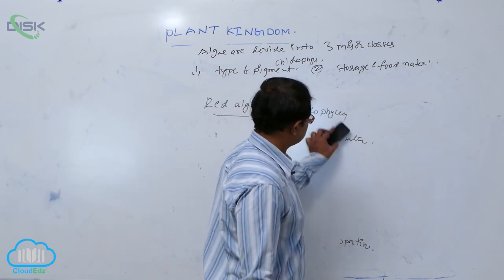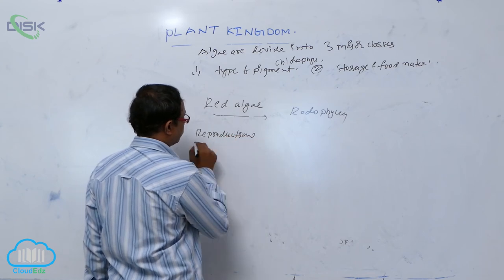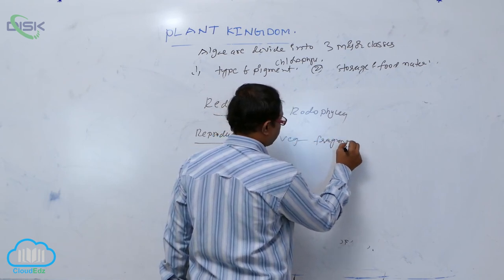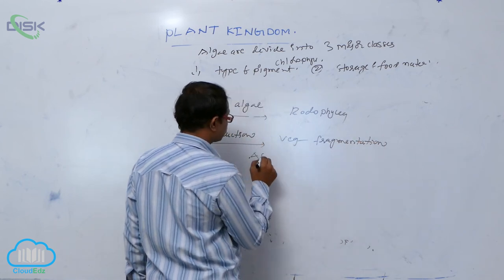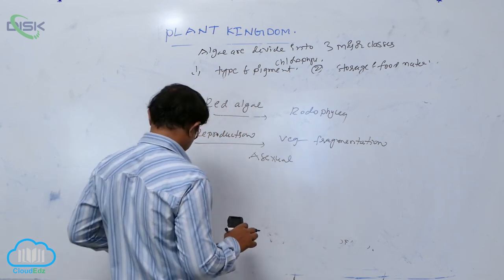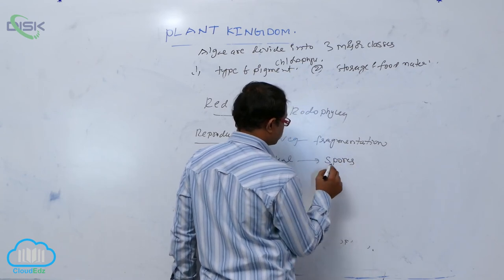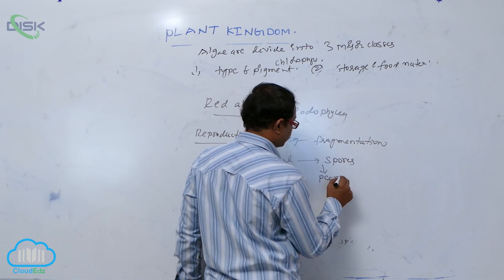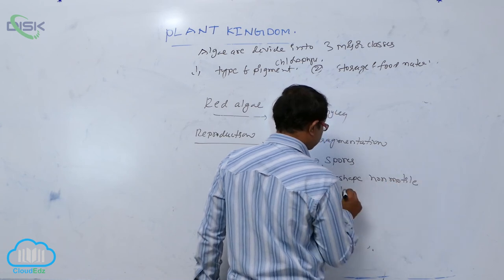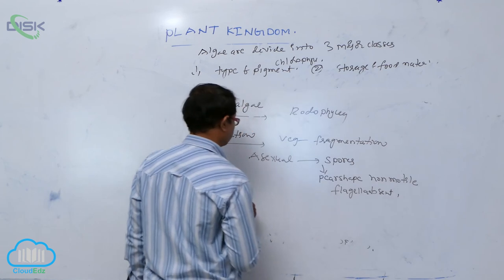In red algae reproduction, vegetative reproduction takes place by fragmentation. Asexual reproduction takes place by spores, which are non-motile — meaning flagella are absent. This is an important point: flagella are absent in asexual reproduction.